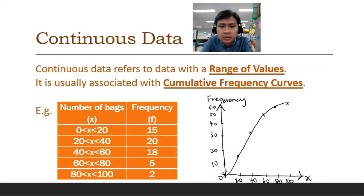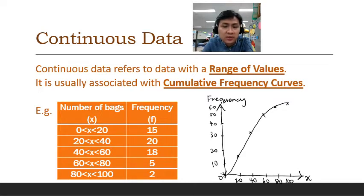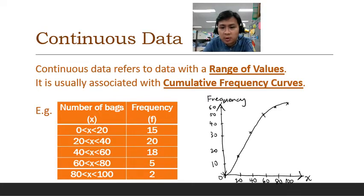How about continuous data? Continuous data refers to data with a range of values. For example, this may be the number of bags being sold over a period of 2 to 3 months. Here, x is between 0 to 20, meaning 0 to 20 bags were sold on 15 days, and x between 20 to 40 means 20 to 40 bags were sold on 20 days. Continuous data refers to a range of x values, and we can plot a cumulative frequency curve for continuous data.